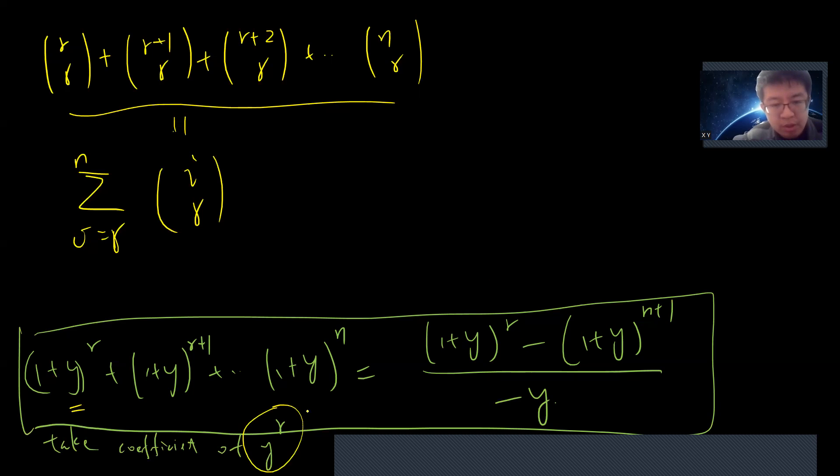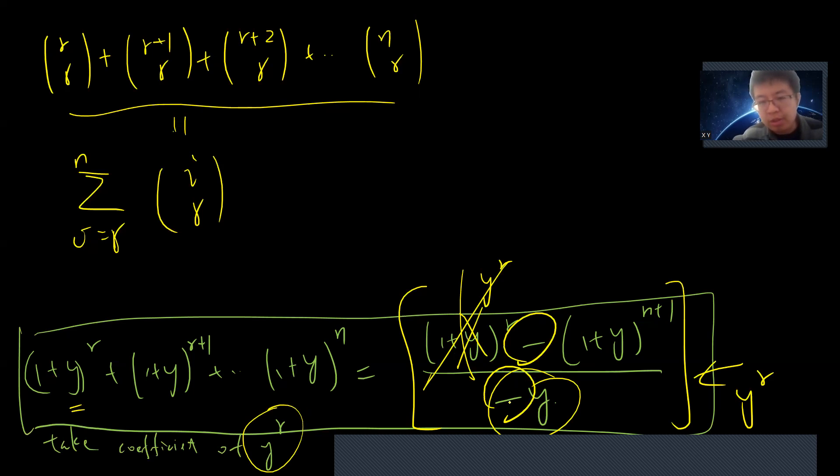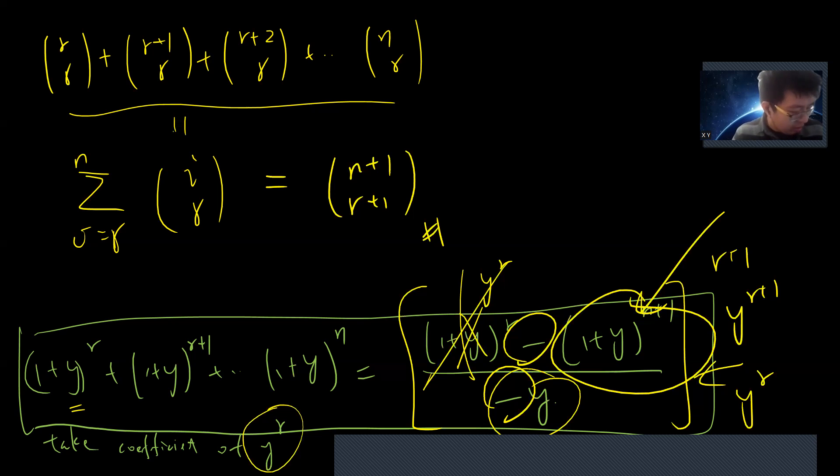Now I take the y^r term from the right side. This term is at most y^r, but there's a negative y, so I can ignore this term. I don't care about the minus. I need the (r+1) term, I need y^(r+1), because if there is y^(r+1), then dividing by y will be y^r. So this gives (n+1 choose r+1). And that's it.